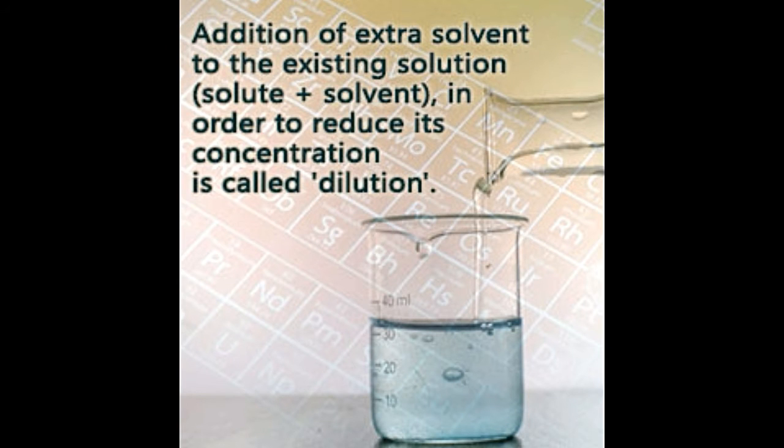Chemicals in concentrated forms are seldom useful. Hence, they are diluted using solvents in order to reduce their pH value. This video shows how to calculate the dilution factor of solutions, given their initial and final concentrations.